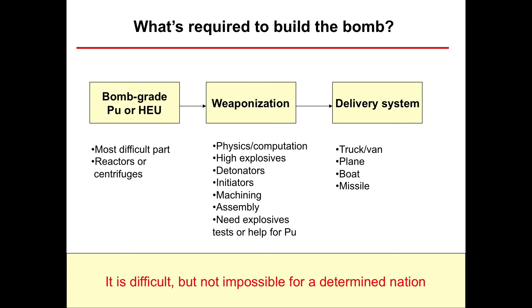That's generally considered to be the most difficult part of making the bomb. The second part, which we call weaponization, is essentially designing and building the bomb — making the weapon itself. You have to start with physics and computation, because you need to understand the nuclear physics of fission and chain reactions. High explosives are also involved, because that's essentially how you start the nuclear reaction. And then a whole bunch of other engineering goes into making the bomb.